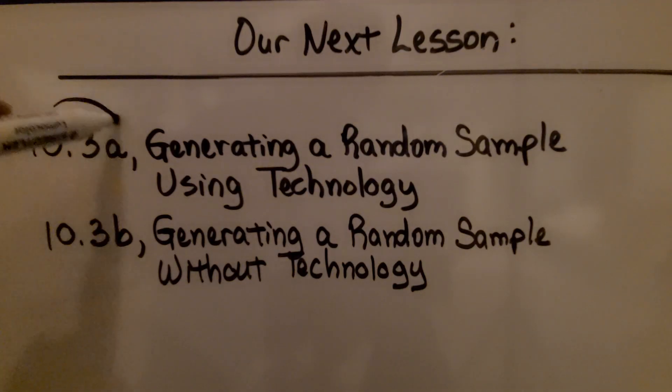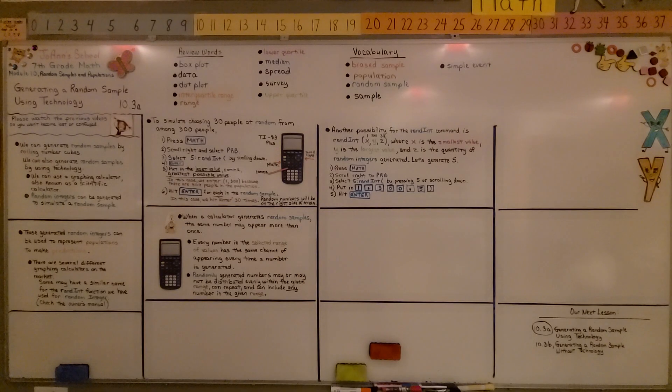Alright, we finished 10.3a. We're going to move on to 10.3b, which is generating a random sample without technology. So as I said, each calculator is different. Check your owner's manual to find out how to make a random integer.